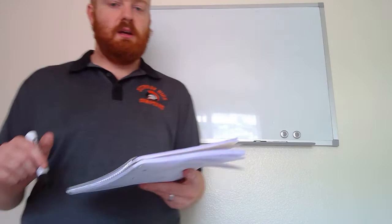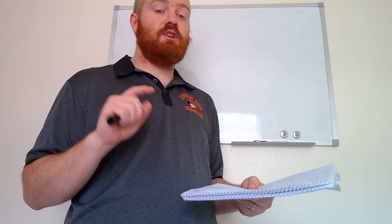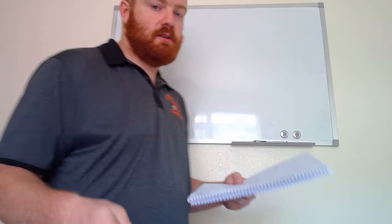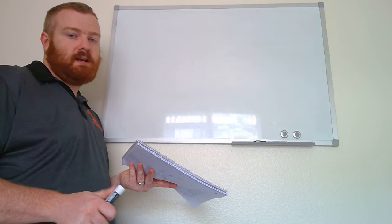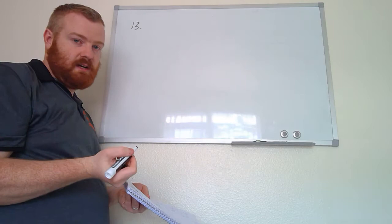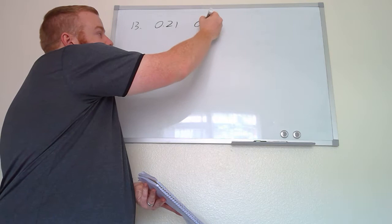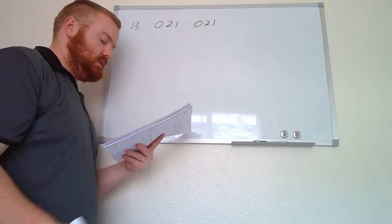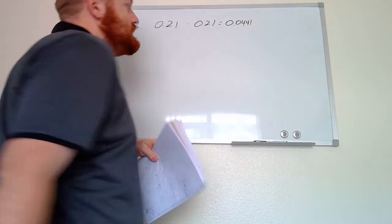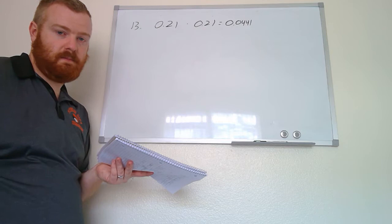For number thirteen, suppose 21 percent of people own dogs. If you pick two people at random, what is the probability that they both own a dog? Similar to independent trials, the probability for each person is 0.21. We multiply 0.21 by 0.21, which gives 0.0441 — approximately a 4.41 percent chance that both people own a dog.